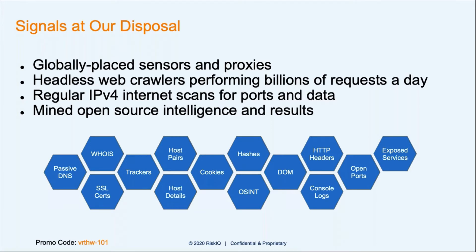The host pairs — this is the relationship of what comes in and what goes out of every domain when you view it. From your browser, you go to a website and they might pull in things from Facebook, send things out to Google Analytics, or pull an image from someplace else — we see all those relationships. The host details associated with it. Cookies that were there. The hashes that were seen. The open source intelligence. The document object model. The HTTP headers. The console log messages. The open ports. The exposed services that might be out there.